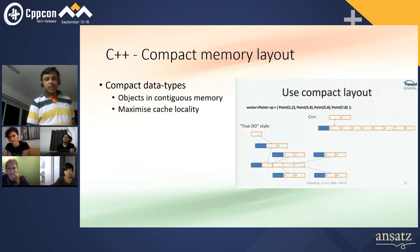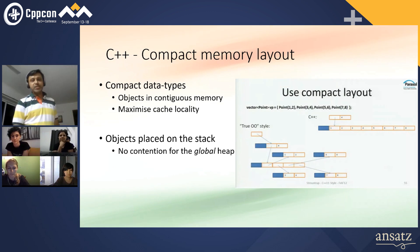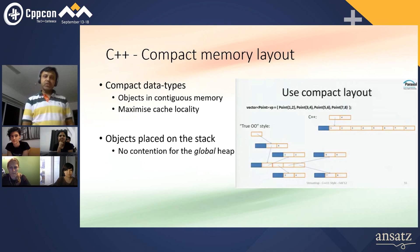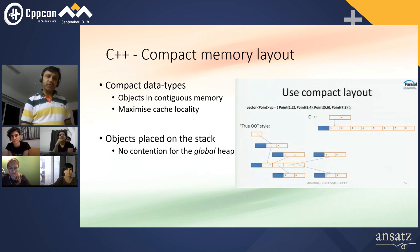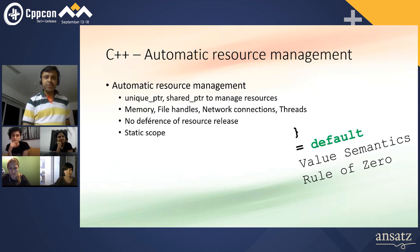Compact memory layout — objects are contiguous in memory, maximizing cache locality. Objects placed on the stack mean no contention for the global heap; you're not fighting some global lock to get memory.